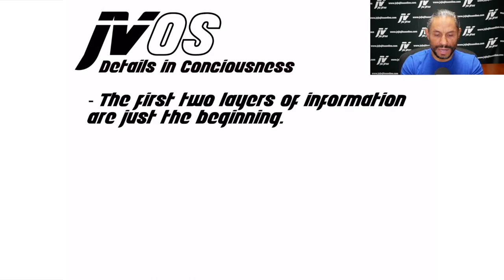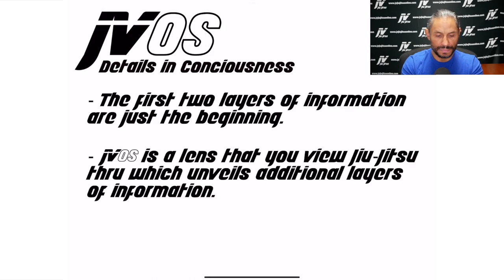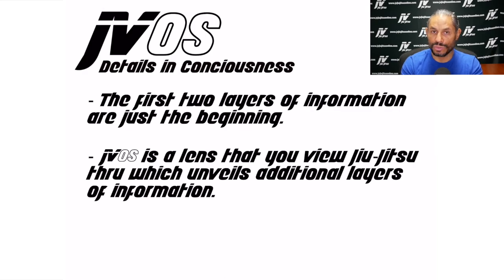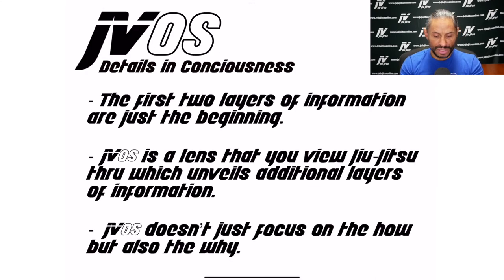The first two layers of information are just the beginning. JVOS is a lens that you view Jiu-Jitsu through, which unveils additional layers of information. This is through mindset. JVOS is a mindset — a way of thinking and a way of being taught — which allows you to ask the kinds of questions that help you gain a deeper understanding of what you are actually trying to do. JVOS doesn't just focus on the how, but it also asks the why.